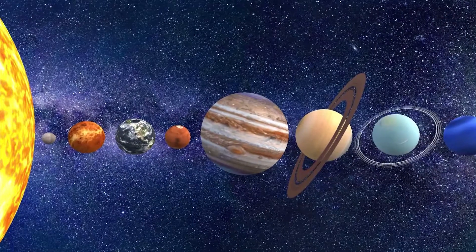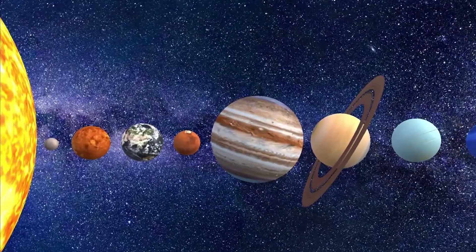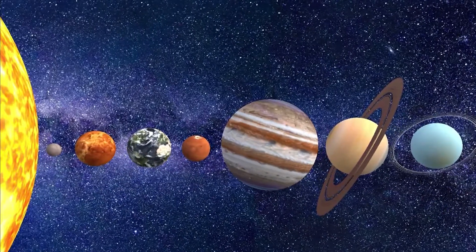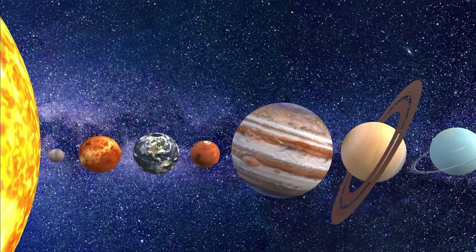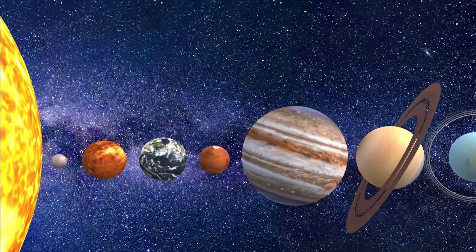Mercury's surface appears heavily cratered and is similar in appearance to the Moon's, indicating that it has been geologically inactive for billions of years. Having almost no atmosphere to retain heat, it has surface temperatures that vary diurnally more than on any other planet in the solar system.